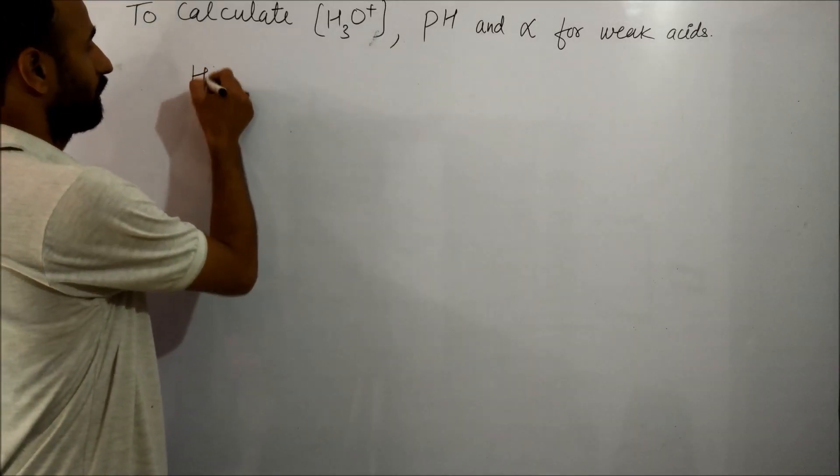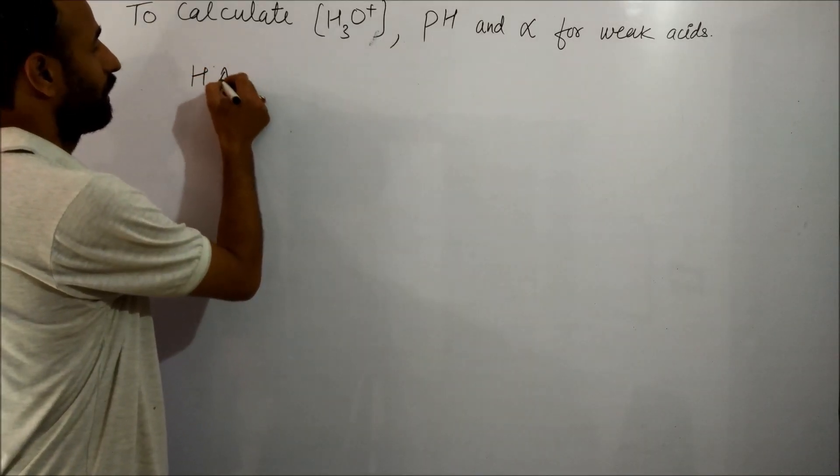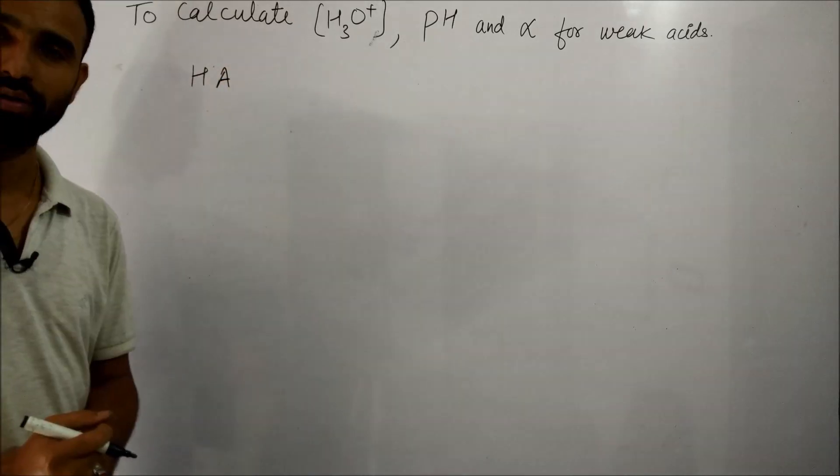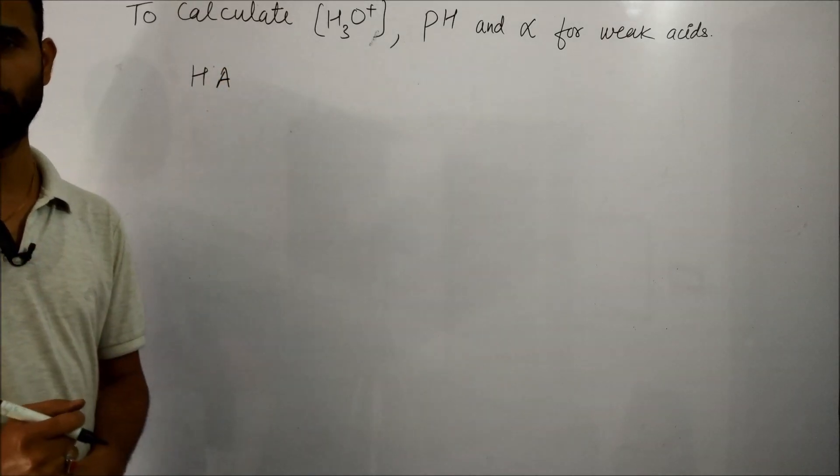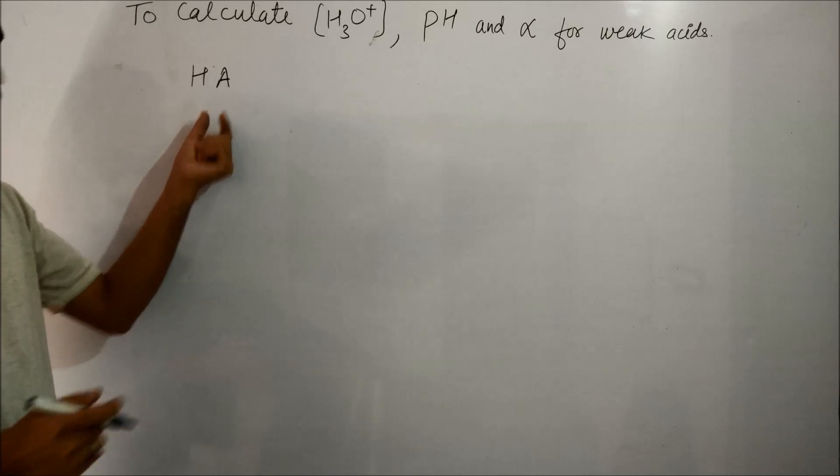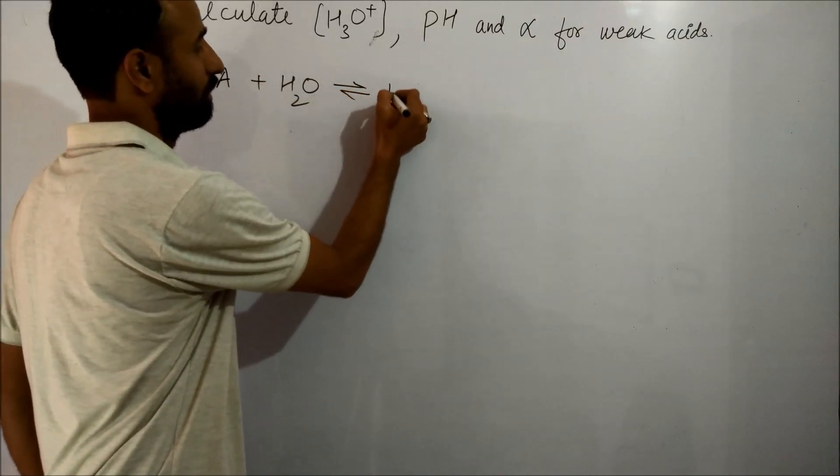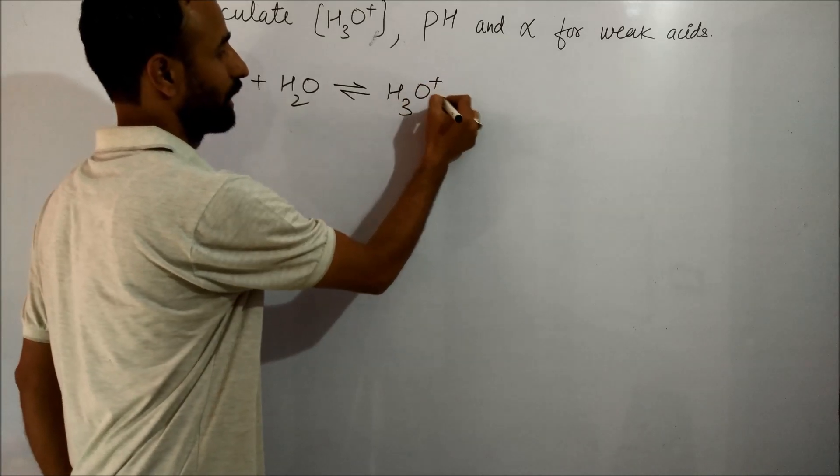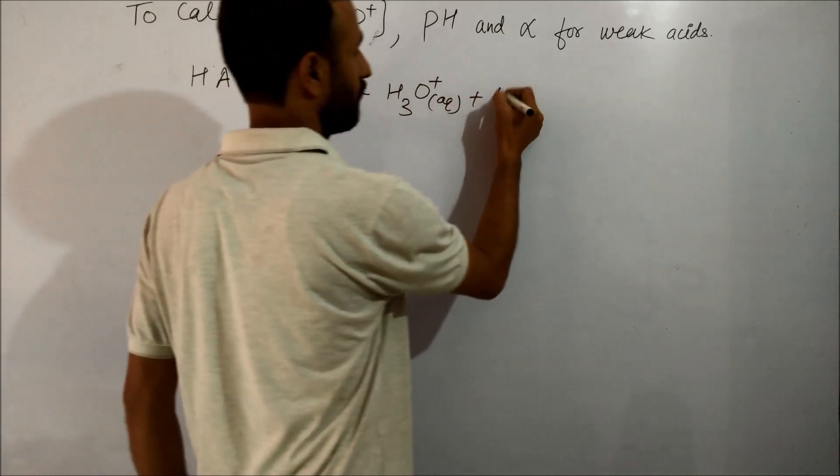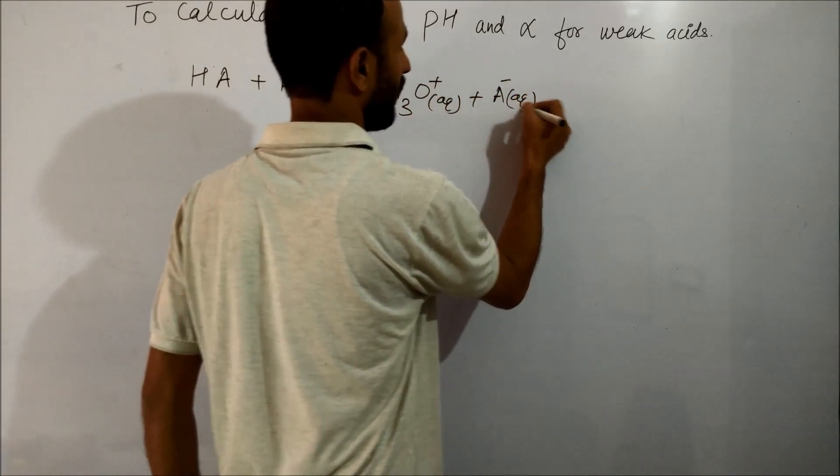Let us consider a weak monobasic acid whose concentration is given as HA. When it is dissolved in water, we get H3O+ and A-.